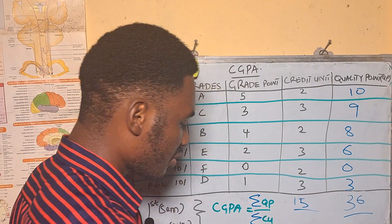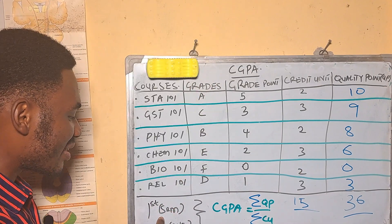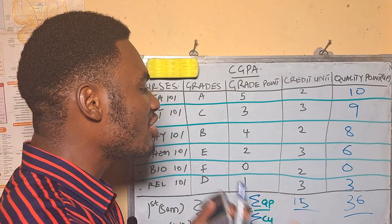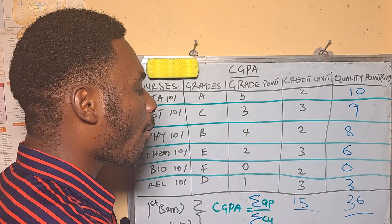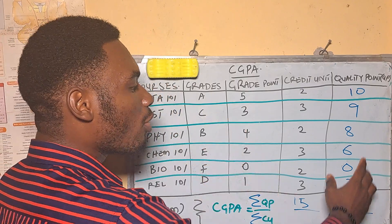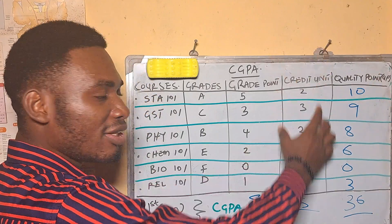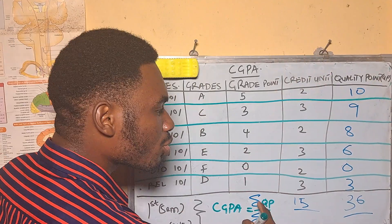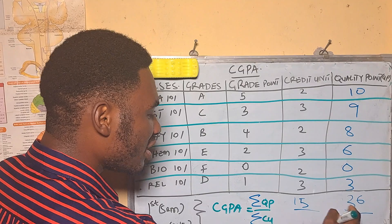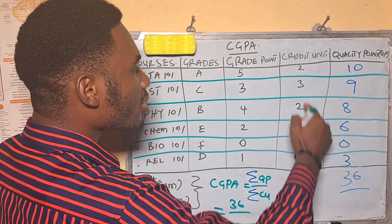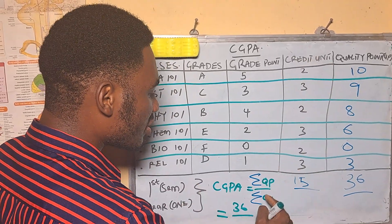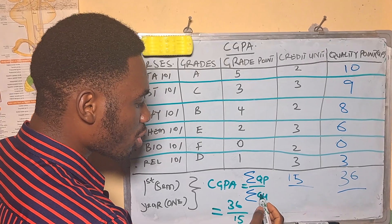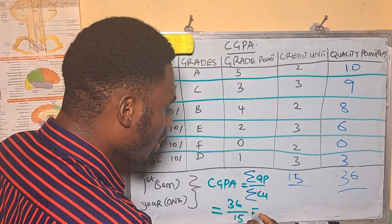Adding up the whole credit units gives us a total of 15 credit units for first semester in year one. To get the CGPA for this first semester, I divide the total quality points by the total credit units: 36 over 15.